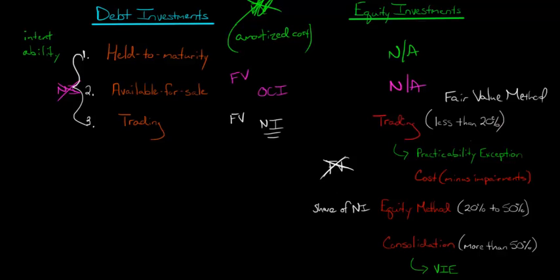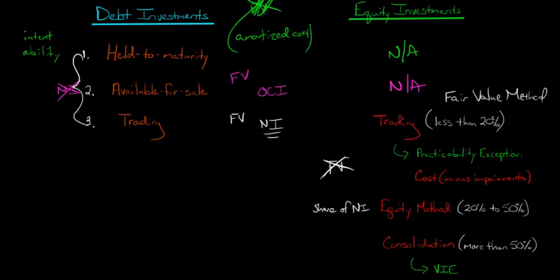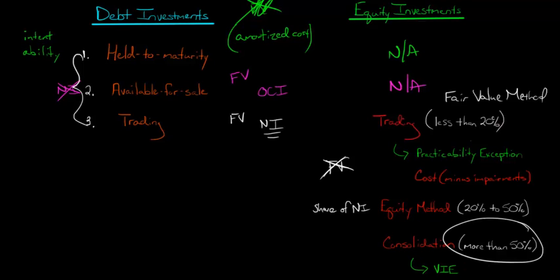There are exceptions and caveats to everything in accounting. In some cases, when you don't own more than 50%, you might still be required to do a consolidation. There are things called variable interest entities, also known as special purpose entities or SPEs. In some cases, you might actually be required to consolidate a VIE even though you might not own more than 50% of it. We'll talk about that in videos to come.